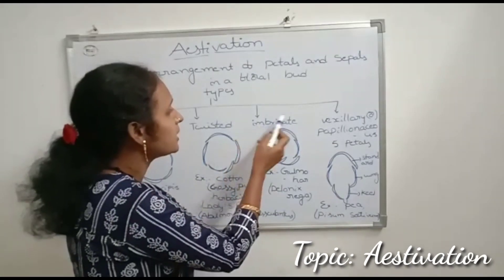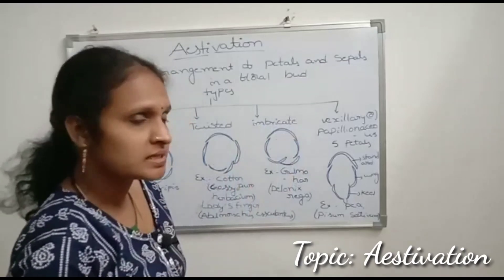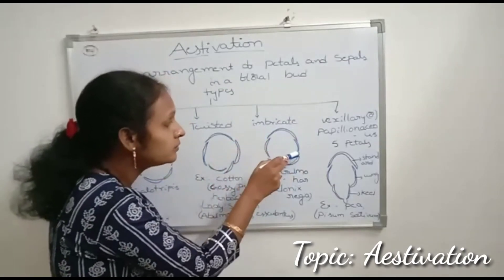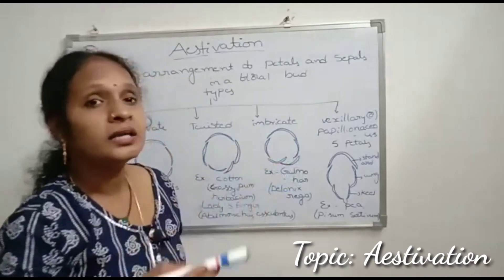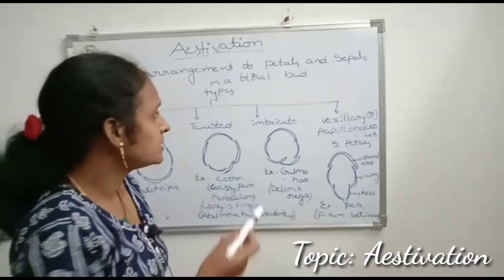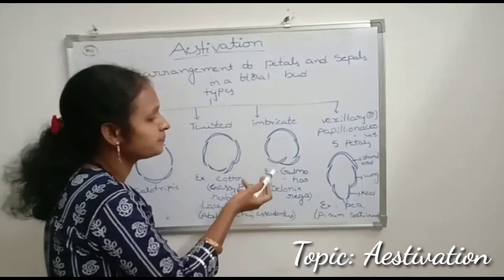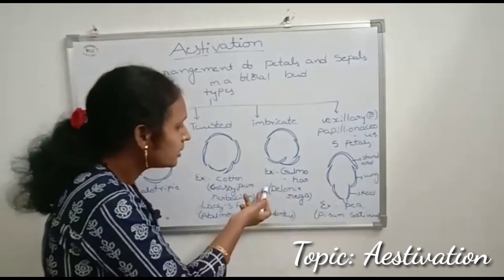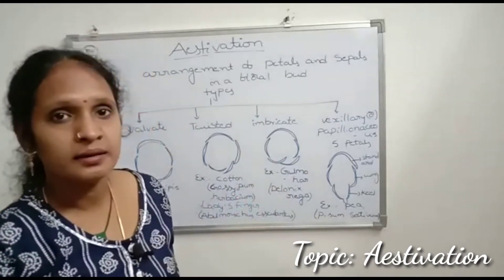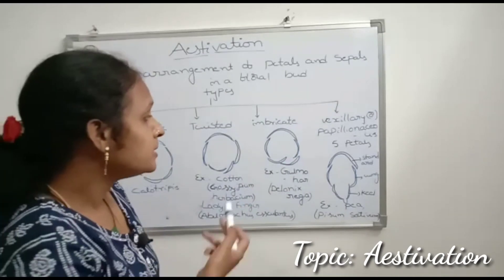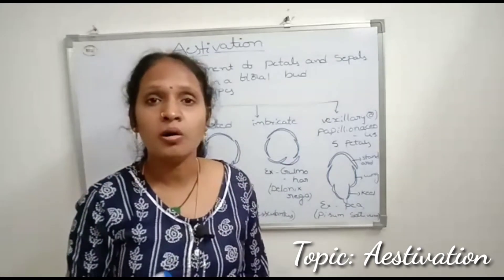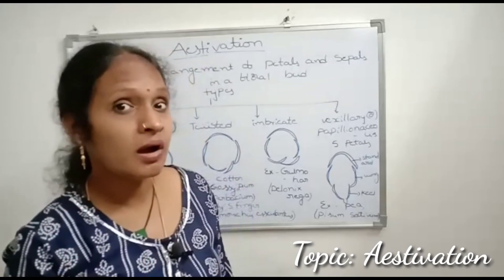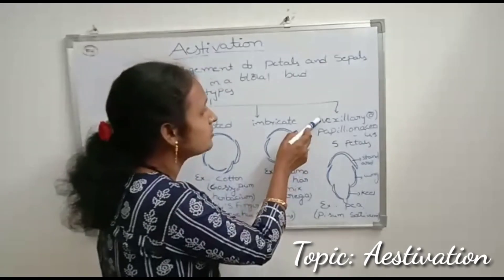The third type is imbricate estivation, where their margins overlap one another but not in a particular direction. Example: gulmohar. The scientific name of gulmohar is Delonix regia. These gulmohar plants have orange-colored flowers and are very useful as ornamental plants.